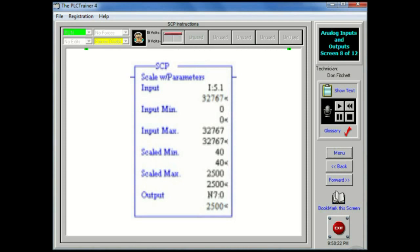The parameters needed by the SCP instruction are: Input - the value to be scaled, which may be a word address or an address of floating point data elements. Input Min - the minimum value for the input, low end of range. Input Max - the maximum value for the input, high end of range. Scaled Min - the minimum scaling value representing the low end of the scaled range of the input. The scaling relationship is linear. Scaled Max - the maximum scaling value.